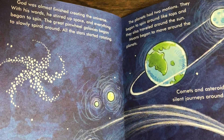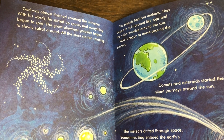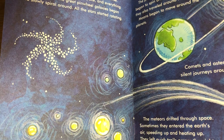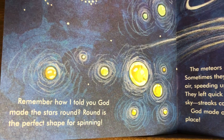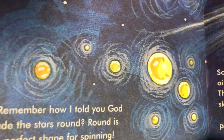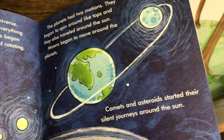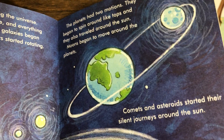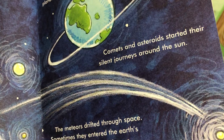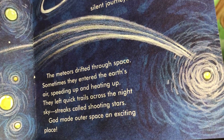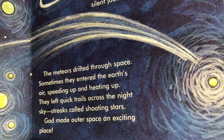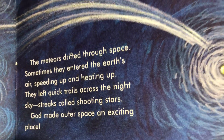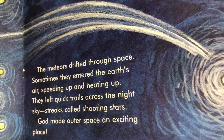God was almost finished creating the universe. With his words, he stirred up space and everything began to spin. The great pinwheel galaxies began to slowly spiral around. All the stars started rotating — remember how God made the stars round? Round is the perfect shape for spinning. The planets began to spin around like tops and also traveled around the sun. Moons began to move around the planets. Comets and asteroids started their silent journeys around the sun. Meteors drifted through space — sometimes they entered the earth's air, speeding up and heating up, leaving quick trails across the night sky called shooting stars. God made outer space an exciting place.